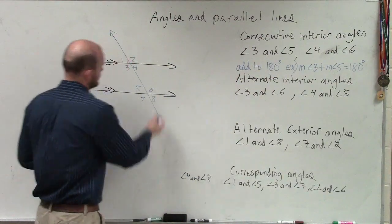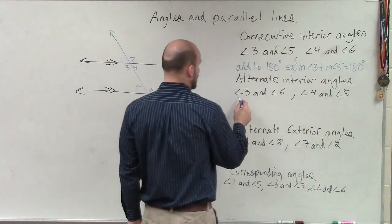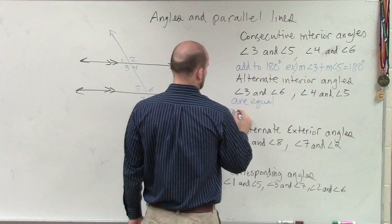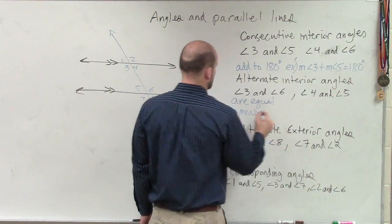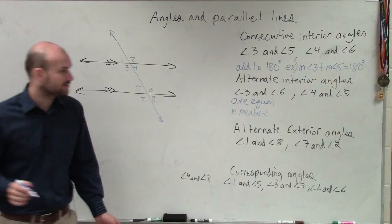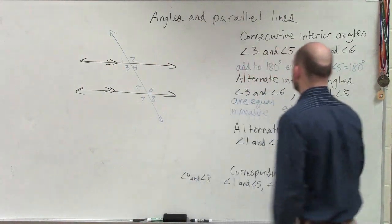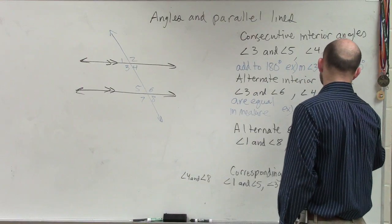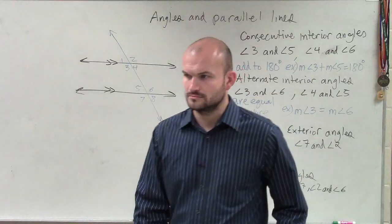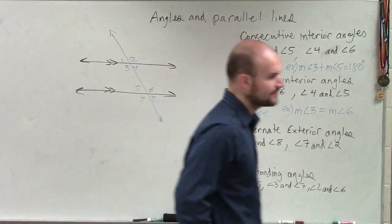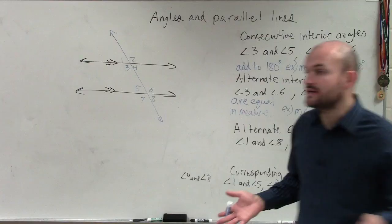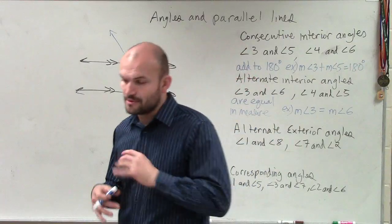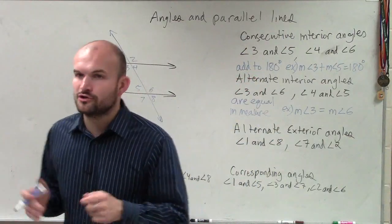Alternate interior angles — four and five — alternate interior angles are equal in measure. So that means they're the exact same value. For example, the measure of angle three is equal to the measure of angle six. If you have two angles from parallel lines that are alternate interior, you know their measures are equal to each other.